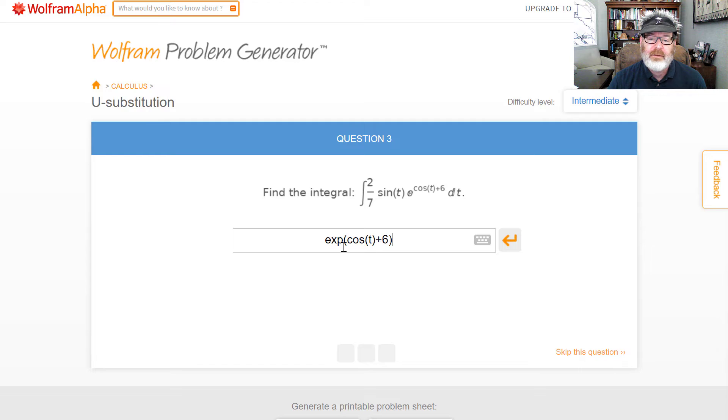Now when I take the derivative, I'll get e to that same power and then times a negative sine. So I have the sine, so I need a negative, so just negative two sevenths. And don't forget the plus c.